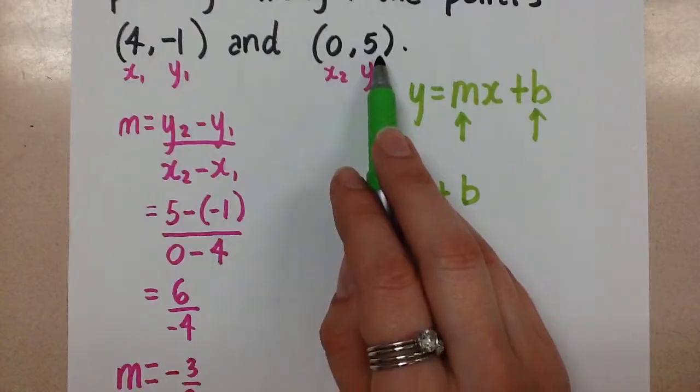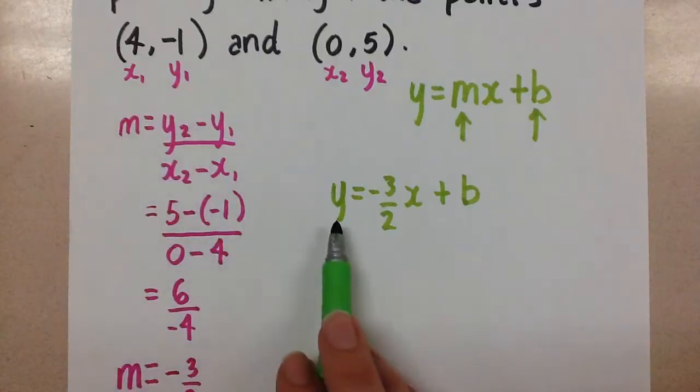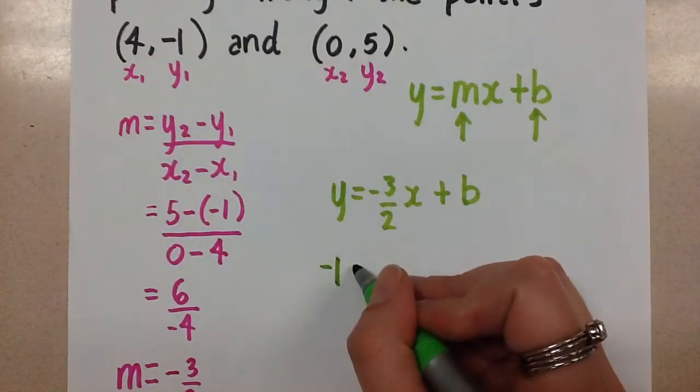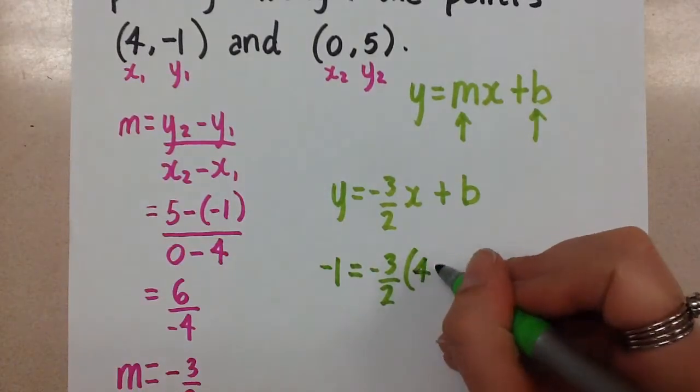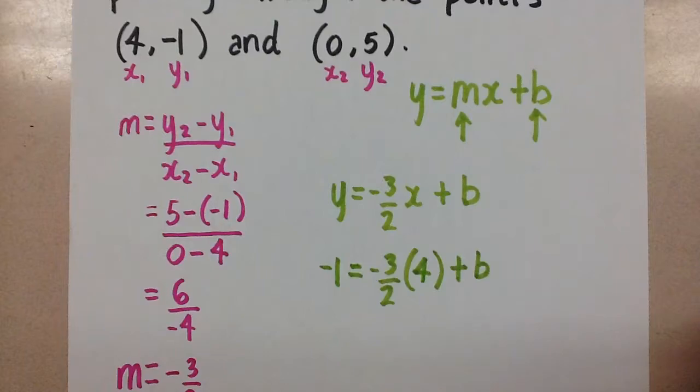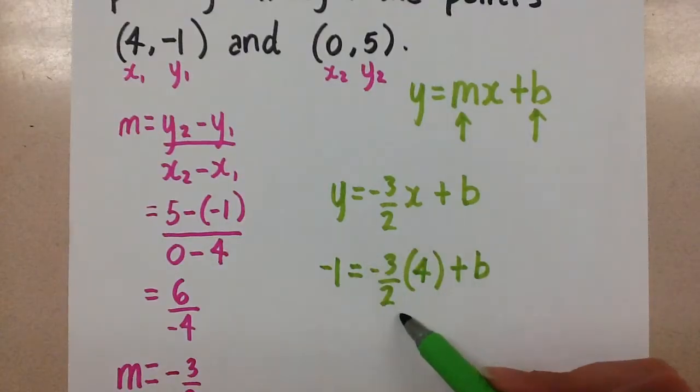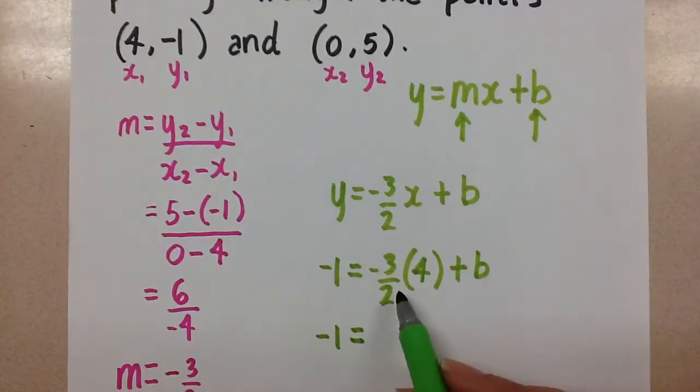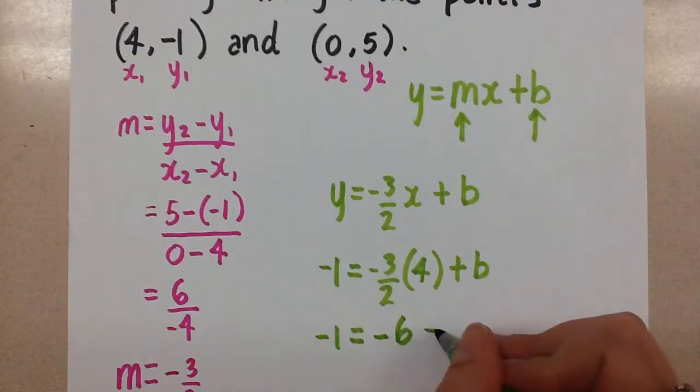So if we choose this one, we'll use this x and this y, and if we choose this one, we'll use this x and this y. So we'll substitute in the x and y values into the equation we're working with. So my y, let's do this point, is negative 1 and negative 3 over 2 times my x, which is 4, plus b. So here's our equation. The b is the unknown. We want to solve for that b value. Let's multiply this here. So we'll get negative 1 equals, when you multiply negative 3 times 4 and then divide by 2, that gives us a nice whole number. That's negative 6 plus b.